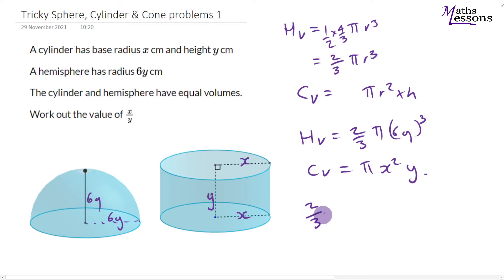So we have two thirds of pi times 6y cubed, now all of that is cubed, equals pi times x squared times y. Well, straight away we can cancel the pi's, divide both sides by pi. And 6y cubed is equal to 216. So we're going to get two thirds times 216 times y cubed equals x squared times y. And let's give ourselves a little bit more space.